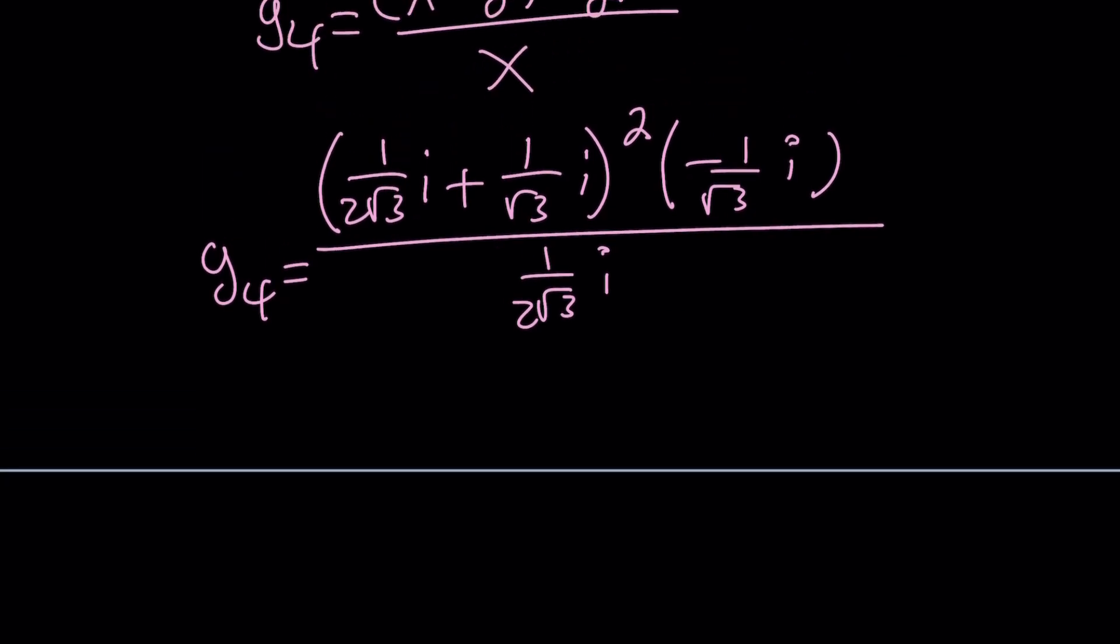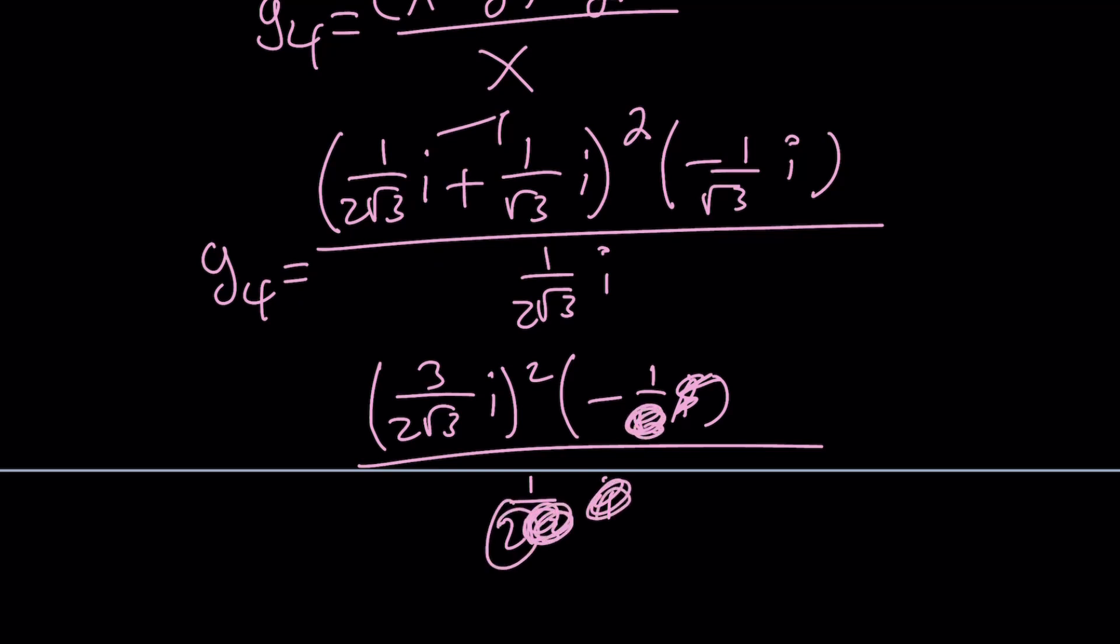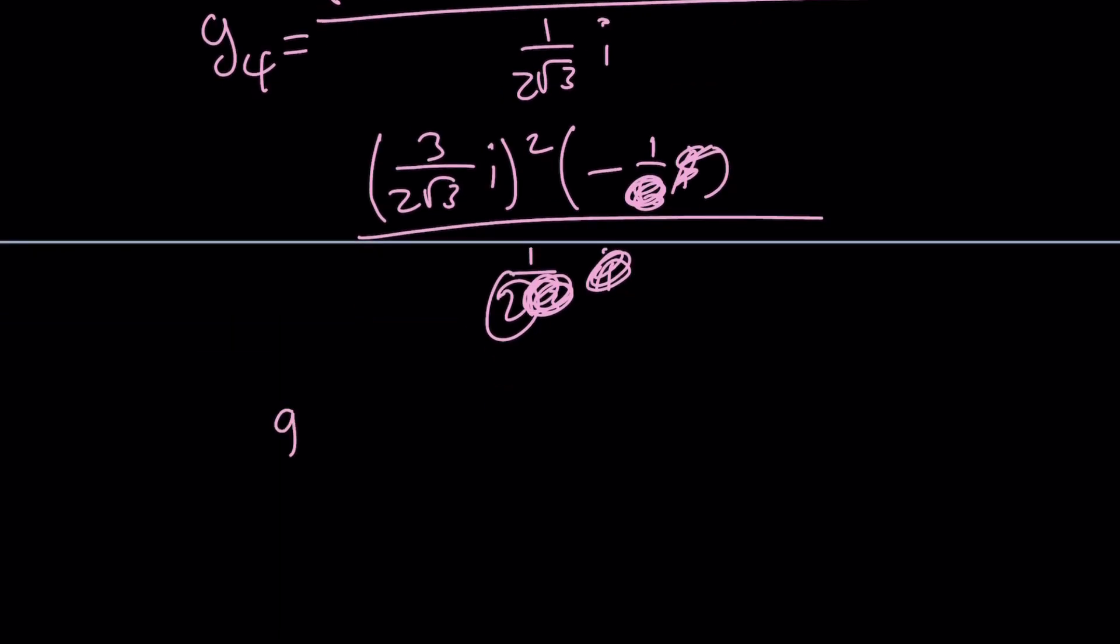Let's go ahead and simplify it and see what happens. When you add these two things, it's going to give you 3 over 2 root 3i. And then you're supposed to square it, and multiply by this, and then divide by that. I could probably simplify a couple things here, such as these two i's will cancel out. The root 3s are going to cancel out. And this two, we can go ahead and put it in the numerator as a multiplier.